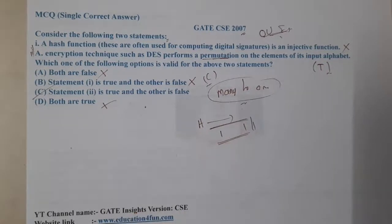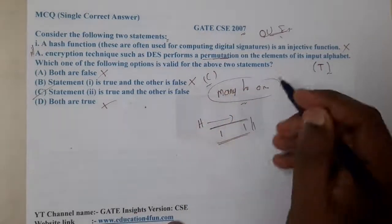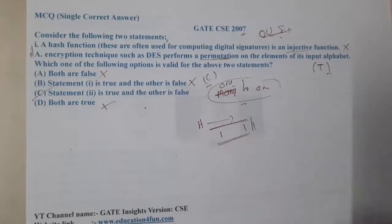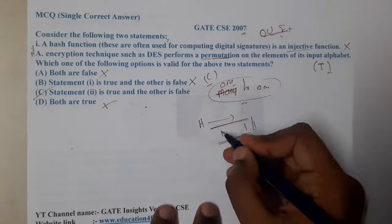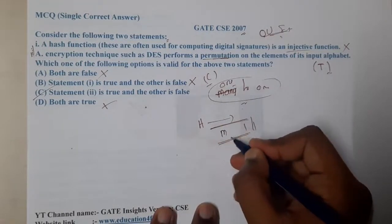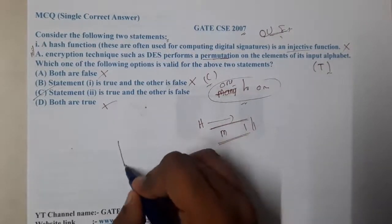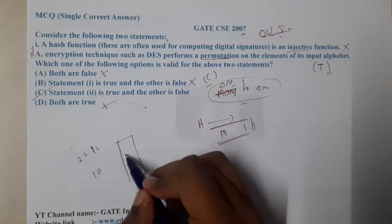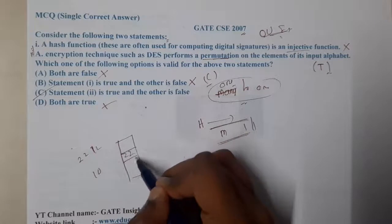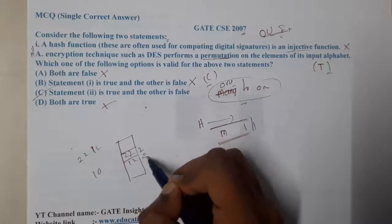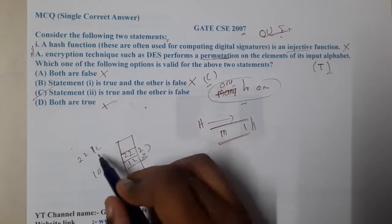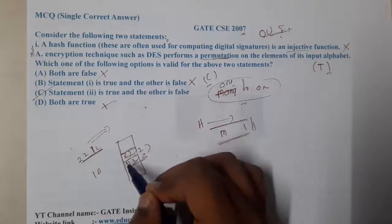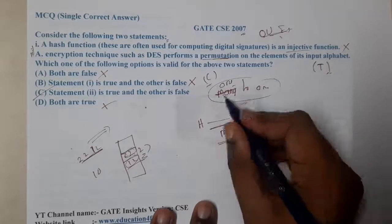Sorry for a silly confusion — injective is actually one-to-one, not many-to-one. But in hashing, we will not always get one-to-one; hashing sometimes works as many-to-one. For example, if you do hash mod 10 with two inputs 22 and 12, using linear probing you get 22 in one slot and 12 placed in the next slot — both mapped to the same initial value, kept in different slots.